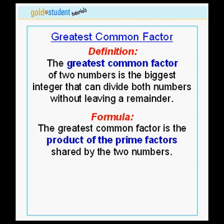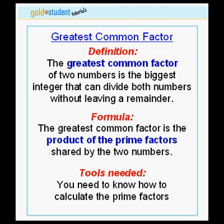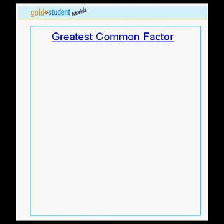Next, the formula. The greatest common factor is the product of the prime factors shared by the two numbers. Therefore, you will need to know how to calculate the prime factors of each of the two numbers.